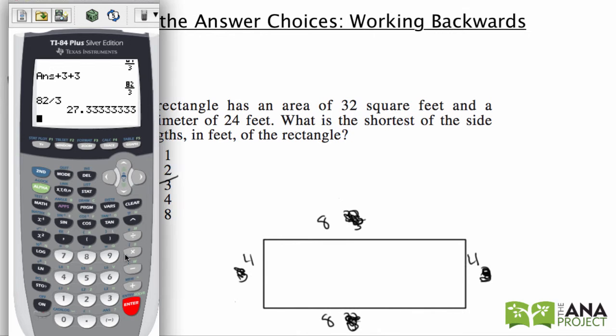And then we could try this, well, 4 plus 4 is 8, and then 8 plus 8 is 16. So the perimeter is 24.